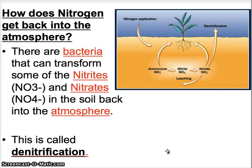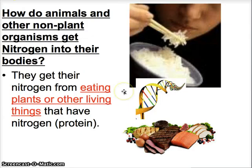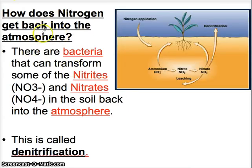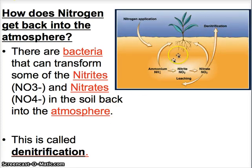Let's complete the cycle. We talked about how nitrogen goes from the air through the soil through different bacteria and back into plants, but we didn't talk about how nitrogen goes back into the air. Nitrogen goes back into the atmosphere through a different type of bacteria that transforms nitrite and nitrates back into regular atmospheric nitrogen. As you can see, the nitrogen cycle relies heavily on different types of bacteria that live in the soil or in the water. This process where nitrogen goes back into the air is called denitrification.